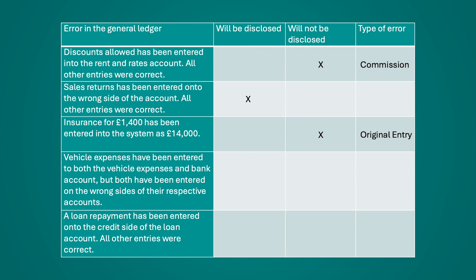The penultimate example: vehicle expenses have been entered to both the vehicle expenses and bank account, but both have been entered on the wrong sides of their respective accounts. Effectively, both the debit and credit entries have been switched. Rather than debit vehicle expenses and credit bank, it's been entered as credit vehicle expenses and debit bank. This does not cause an imbalance since the transaction still has an equal debit and credit entry — just the wrong way around. This is an error of reversing entries.